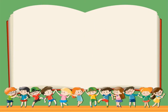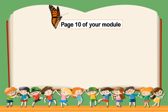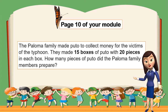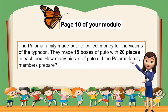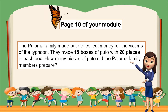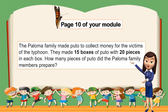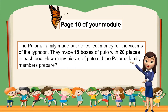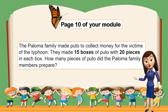Now, let us go back to the story. It's your turn — practice what you have just learned. Go to page 10 of your module and answer this question: The Paloma family made puto to collect money for the victims of the typhoon. They made 15 boxes of puto with 20 pieces in each box. How many pieces of puto did the Paloma family members prepare? Do it now and follow the steps that I taught you, because after a short break, we will find out if your answer is correct.